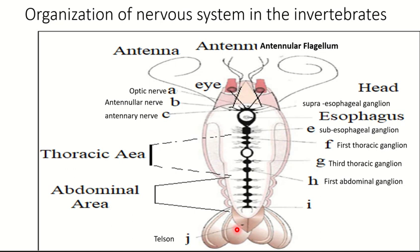If I want to talk about the nervous message of the shrimp — it will start at the sensory organs, which are the eyes and the antennal flagellum. It will pass to the ganglion, which will integrate this message and send a motor message to the effector organs.